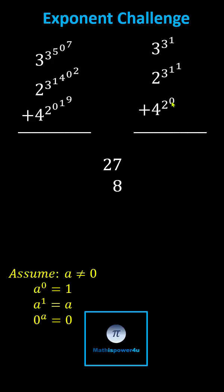And for the last term, 2 to the power of 0 is 1, 4 to the power of 1 is 4.